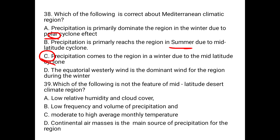Question number 39: Which of the following is not a feature of the mid-latitude desert climate region? A. Low relative humidity and cloud cover. B. Low frequency and volume of precipitation. C. Moderate to high average monthly temperature. D. Continental air masses is the main source of precipitation for the region. The answer is D.